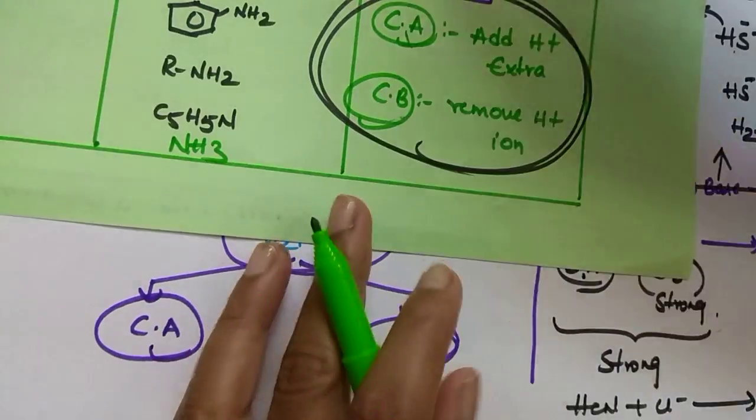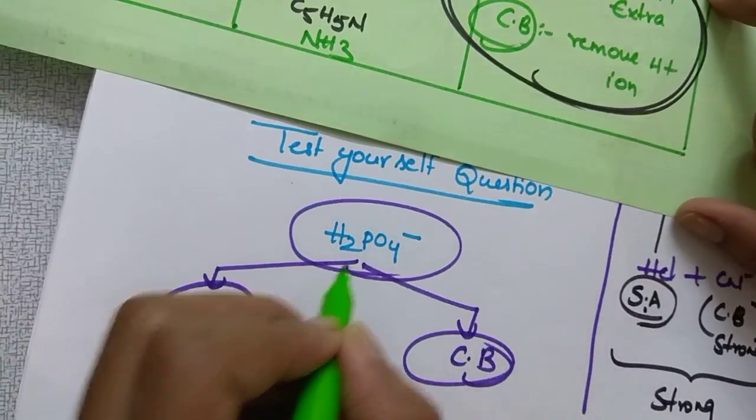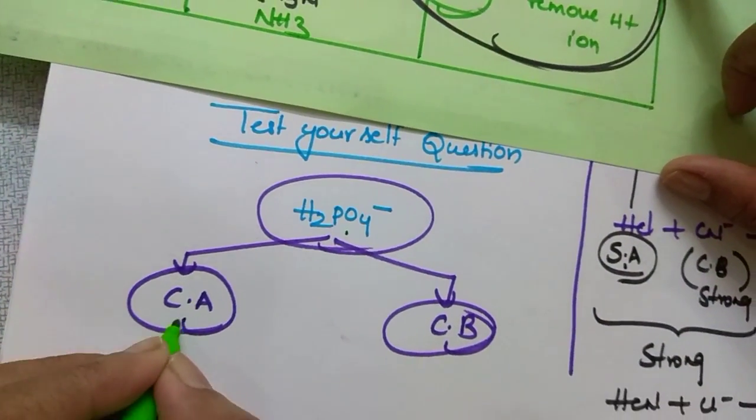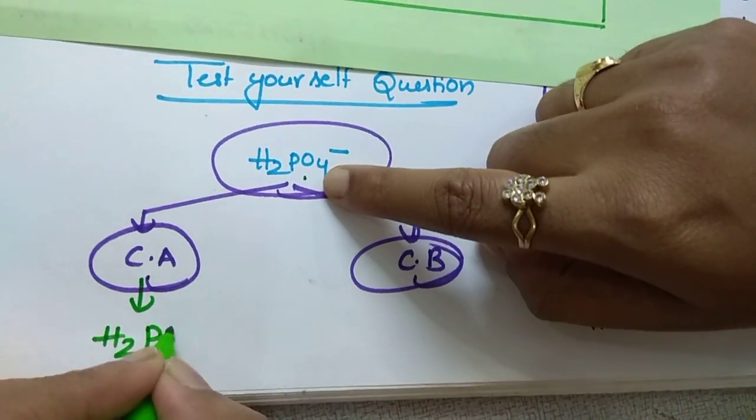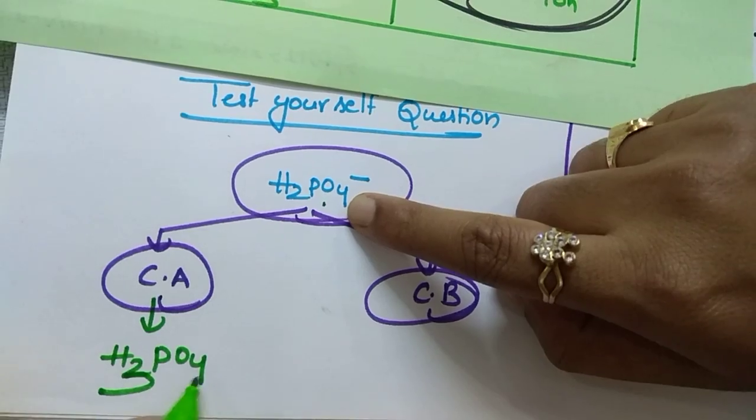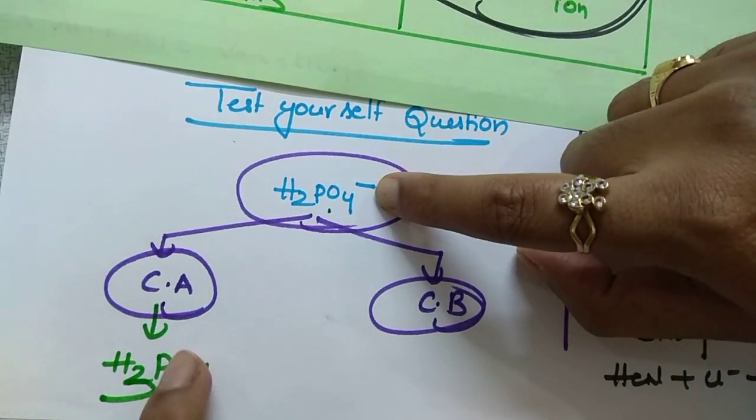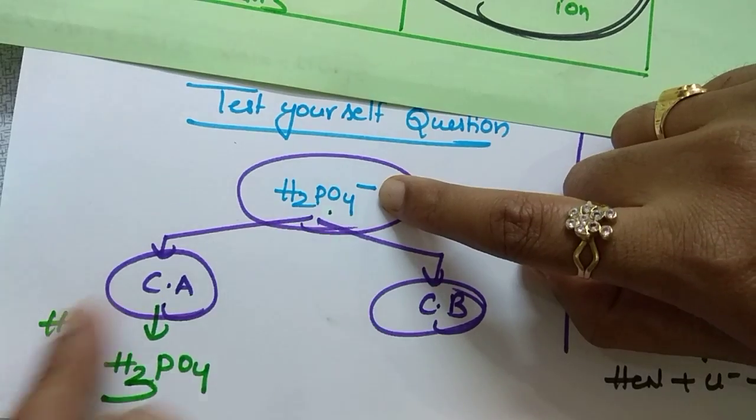Conjugate acid, how do you find it? Add one H⁺ extra. So to this add H⁺ extra, then what do you get? H₂PO₄⁻ is there, right? After getting H⁺ it will be H₃PO₄. Already it is having one minus charge. Whenever H⁺ combines with that, plus and minus, there will be no charge. You get H₃PO₄.